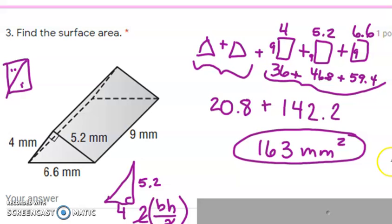Where might students run into trouble here? I think that 6.6 might be a problem when you're calculating the triangle base — so beware, beware, beware.